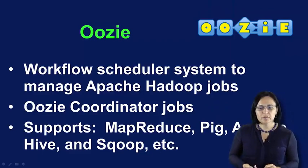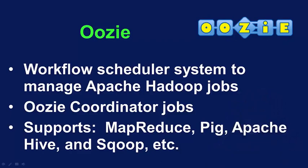Let's talk about Oozie. Oozie is a workflow scheduling system that manages all of our Apache Hadoop jobs. Oozie workflow jobs are what we call DAGs, or directed acyclic graphs. Oozie coordinated jobs are recurrent Oozie workflow jobs triggered by frequency or data availability. It's integrated with the rest of the Hadoop stack, supporting Java MapReduce, Streaming MapReduce, Pig, Hive, Sqoop, and many other jobs right out of the box. It's a very scalable, reliable, and extensible system.